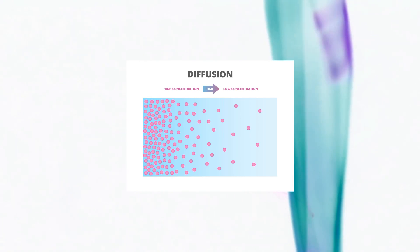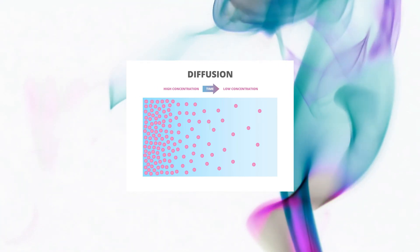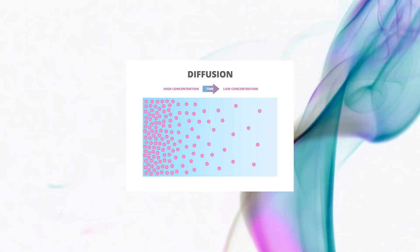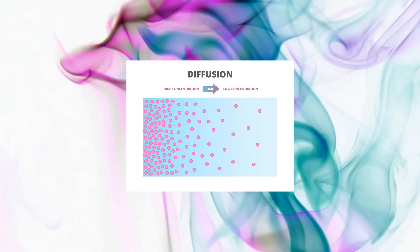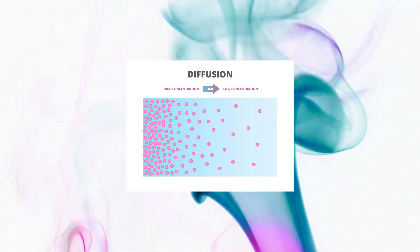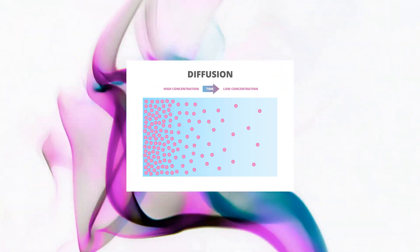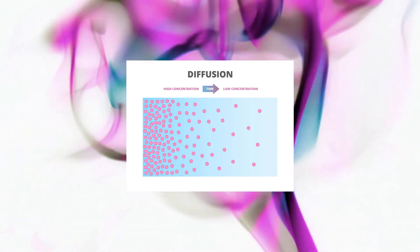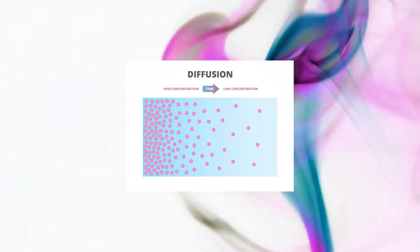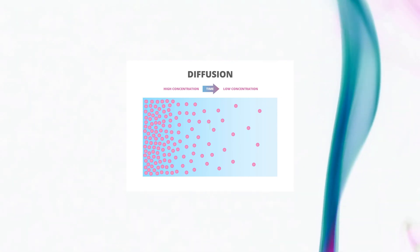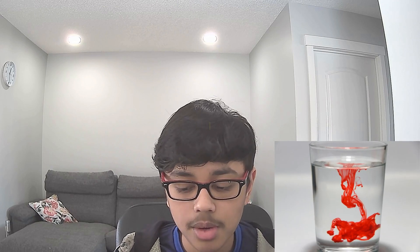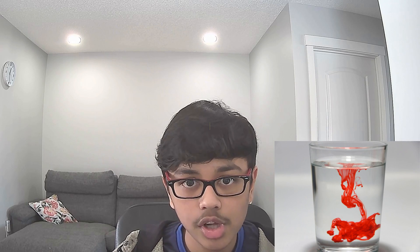Let's start off with diffusion. Diffusion is the process of spreading out from a high concentration to a low concentration. Let's take the example of food coloring and water. If you put a drop of food coloring inside of water, soon enough the food coloring will spread throughout the whole cup of water, and this happens because of diffusion.